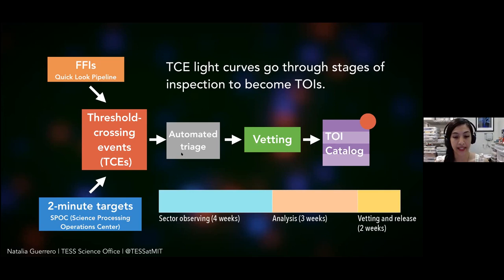Then we go to a vetting process where individual vetters look at and inspect light curves. We have both individual vetting sessions and group vetting sessions that meet about twice a week. Targets that are elevated to the level of planet candidate — ones that would benefit from additional follow-up — make it into the TOI catalog. Overall, from the end of a four-week sector, this process takes about five weeks, depending on the analysis from all the pipelines.